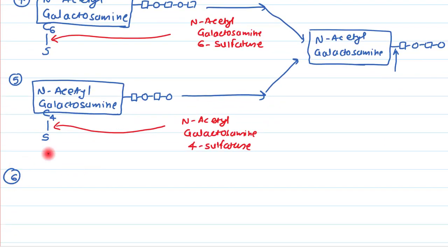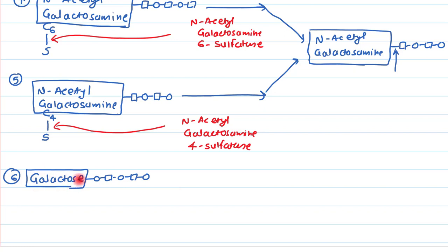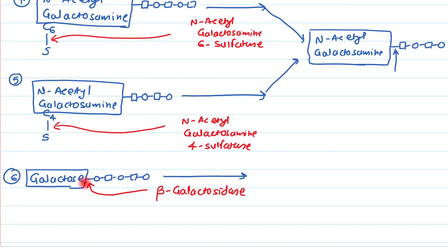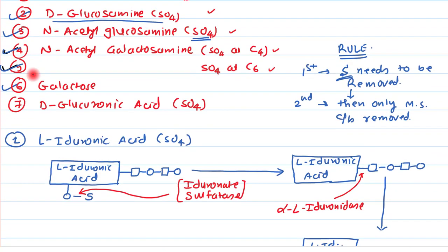The sixth unique sugar is galactose. Galactose occurs at the terminal end of a glycosaminoglycan and does not contain a sulfate group, so we can proceed directly to breaking the bond. The enzyme beta-galactosidase cleaves this bond, releasing galactose and separating the remaining heteropolysaccharide portion.